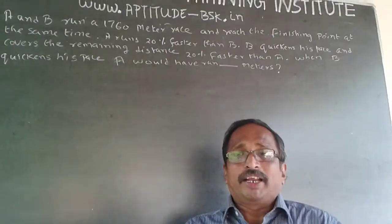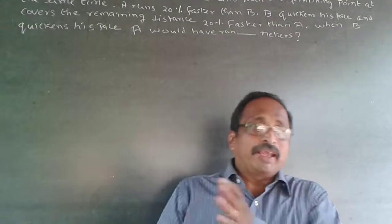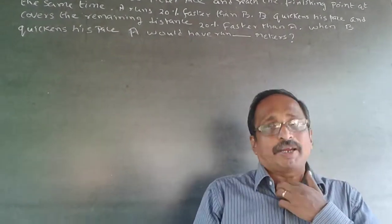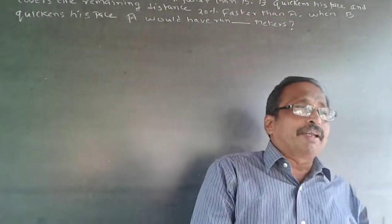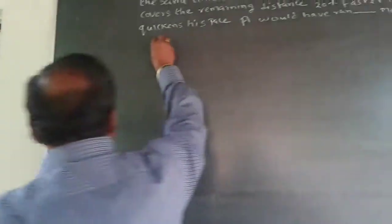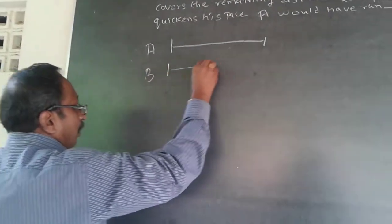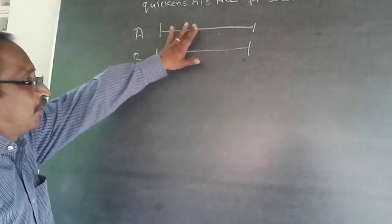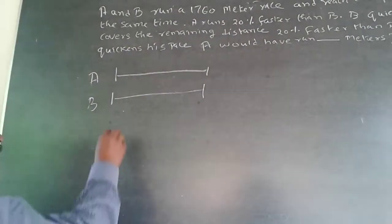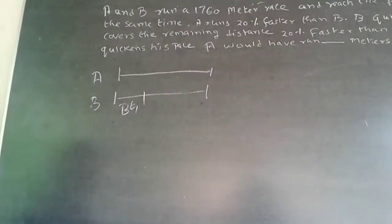Initially, A is running and B is running at his own speed. Let B's speed be B. For some time T1, B is running at his own speed, so the distance covered by B is B × T1. A is 20% faster than B, so A's speed will be B + 20/100 of B, which equals 1.2B. So when B has been running for time T1, A would have covered 1.2B × T1.